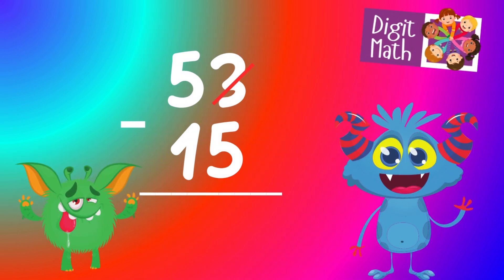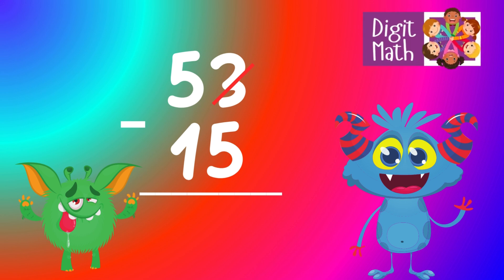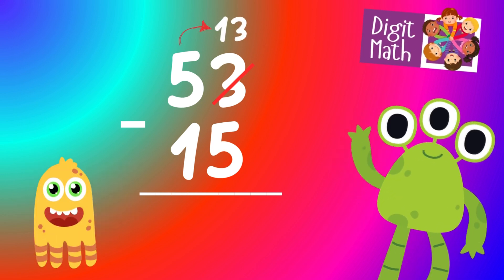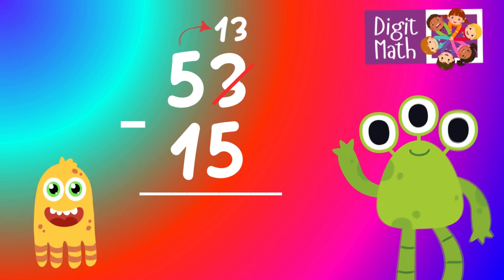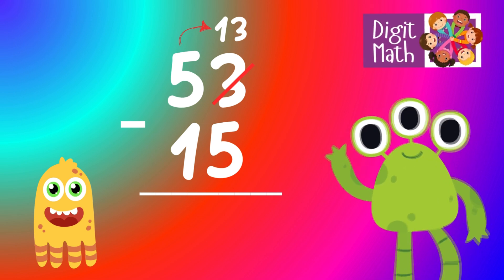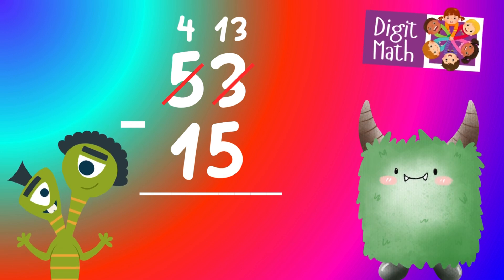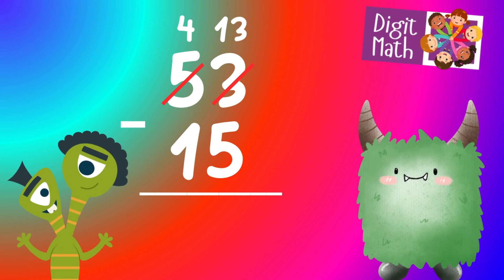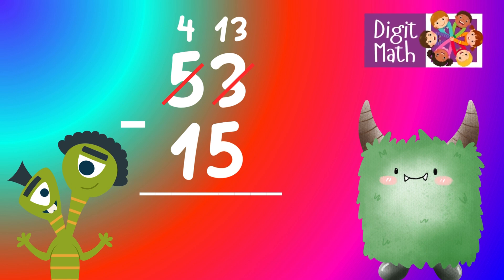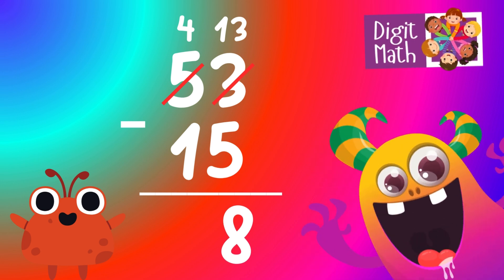In the Units column, we have 3 minus 5. Since it's not possible to subtract 5 from 3, we need to borrow from the Tens column. In the Tens column, we have 5. We take 1 from the Tens, leaving 4 in the Tens column and turning the Units column into 13. Now we have 13 in the Units column. Subtract 5 from 13, which equals 8.